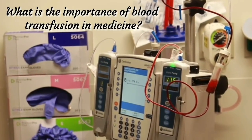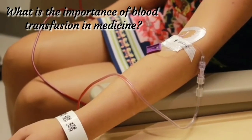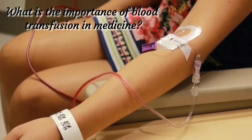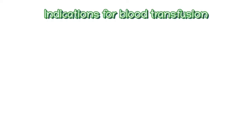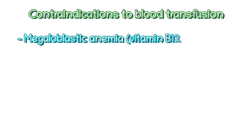Blood transfusions are very important in medicine, as they can be used to replace blood lost during surgeries, injuries, bleeding disorders, or provided if a patient's body is not making blood properly due to a disease. Indications include severe anemia when the oxygen capacity of blood compromises major organs, severe blood loss, anemia of chronic disorders such as renal failure and cancer, and hemoglobinopathies such as sickle cell disease and thalassemia.